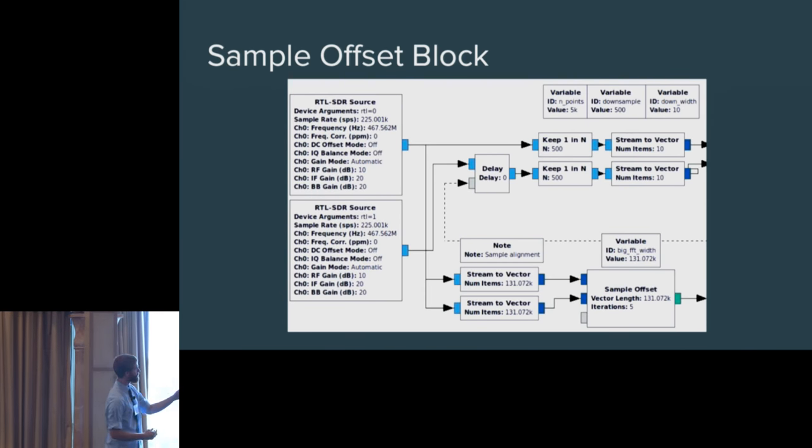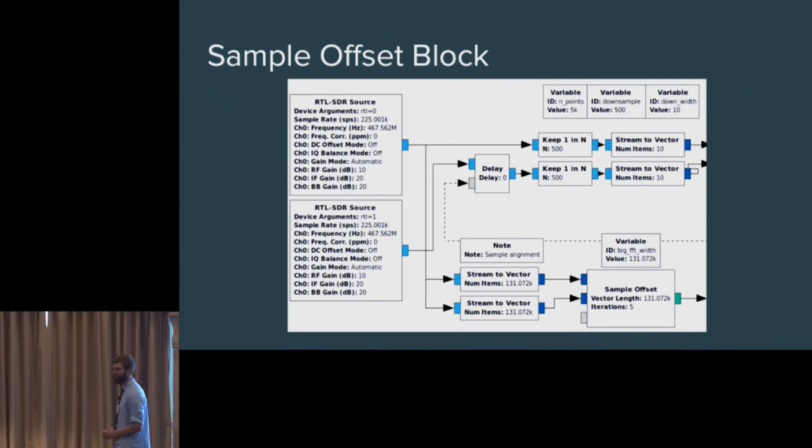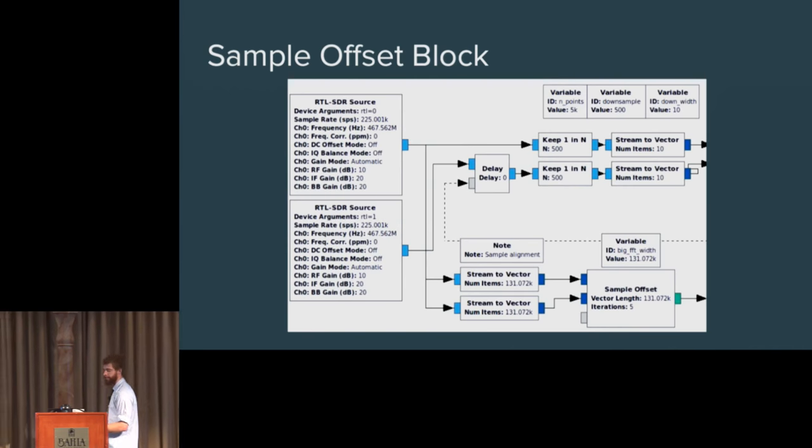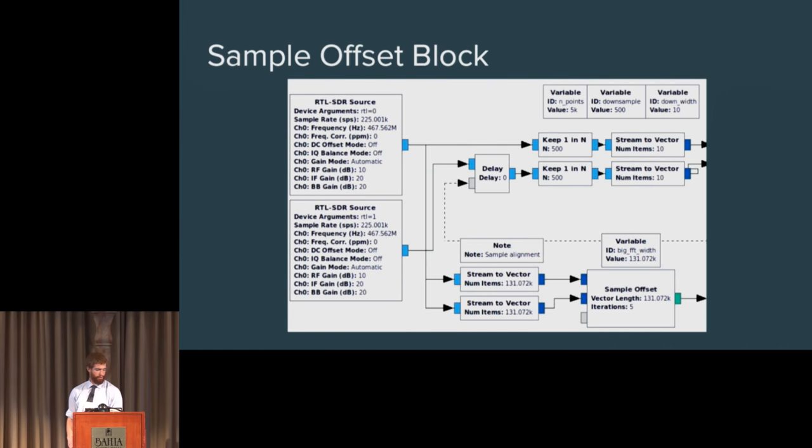You can see the two RTL sources on the left. If you follow the lower chain, they're going to feed into the sample offset block. The sample offset block will output a value that tells us how far apart these two signals are. You can follow that dotted feedback line there to the delay block, and the delay block will delay one of the signals. Now our two signals are lined up. The delay block is the exact same as the standard delay block, except with message control. We ended up needing to use messages for a lot of our feedback.